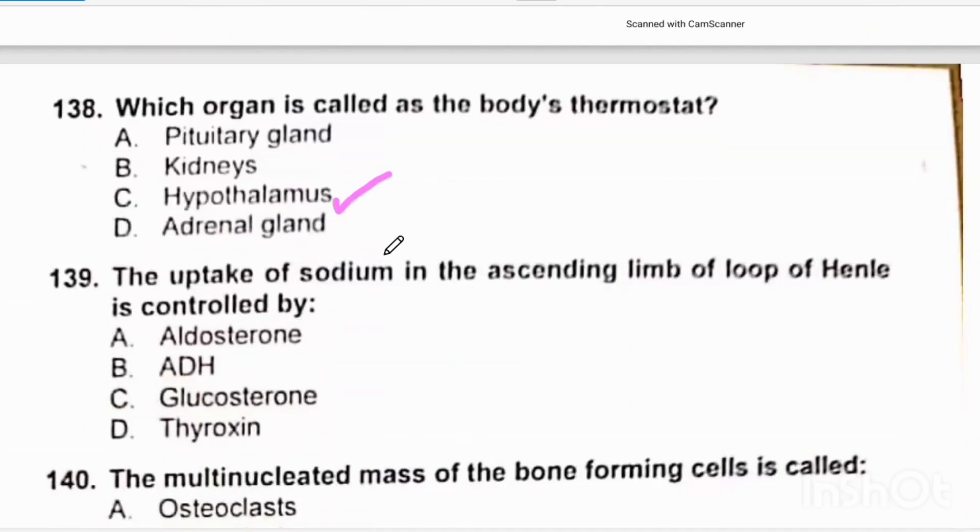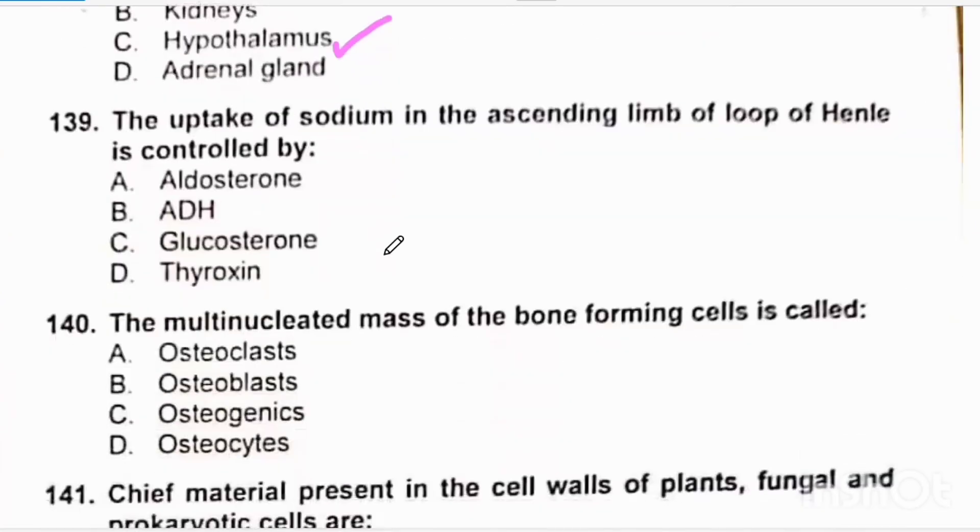Which organ is called the body's thermostat? That is hypothalamus. It is involved in regulation of body's temperature, that's why it's called body's thermostat. The uptake of sodium in the ascending limb of loop of Henle is controlled by a mineralocorticoid, that is aldosterone. ADH is concerned with the absorption of water.